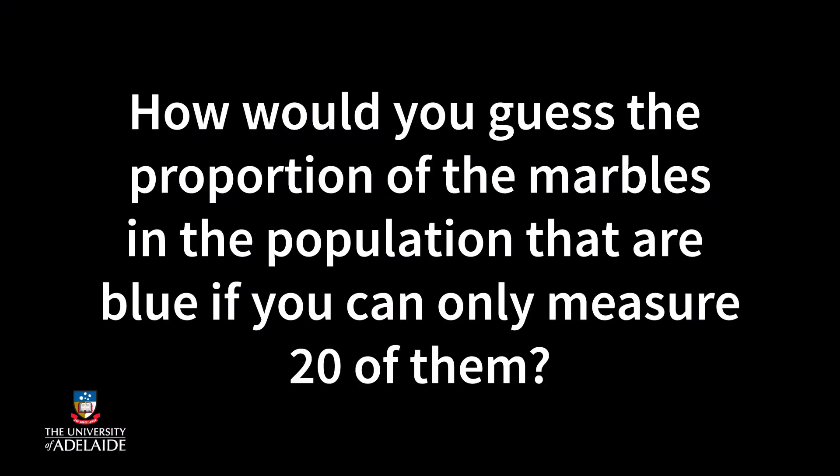So here is your problem. How would you guess the proportion of the marbles in the population that are blue, if you can only measure 20 of them? And this is the key concept of statistics: how can we estimate population parameters when we cannot measure everything? The best way is to take a sample — a small subset of the population — and use this to estimate the parameter by using the appropriate statistic, which is a numerical characteristic of a sample.